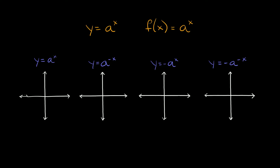This first graph is always going to look something like this — it's showing exponential growth, because you always read the graph left to right, so you can see that this graph is growing. And it's always going to run through the point (0, 1), which is the y-intercept — the point where your graph crosses the y-axis. The next one, y is equal to a to the negative x, is basically the first one just flipped, and again it runs through the same point (0, 1).